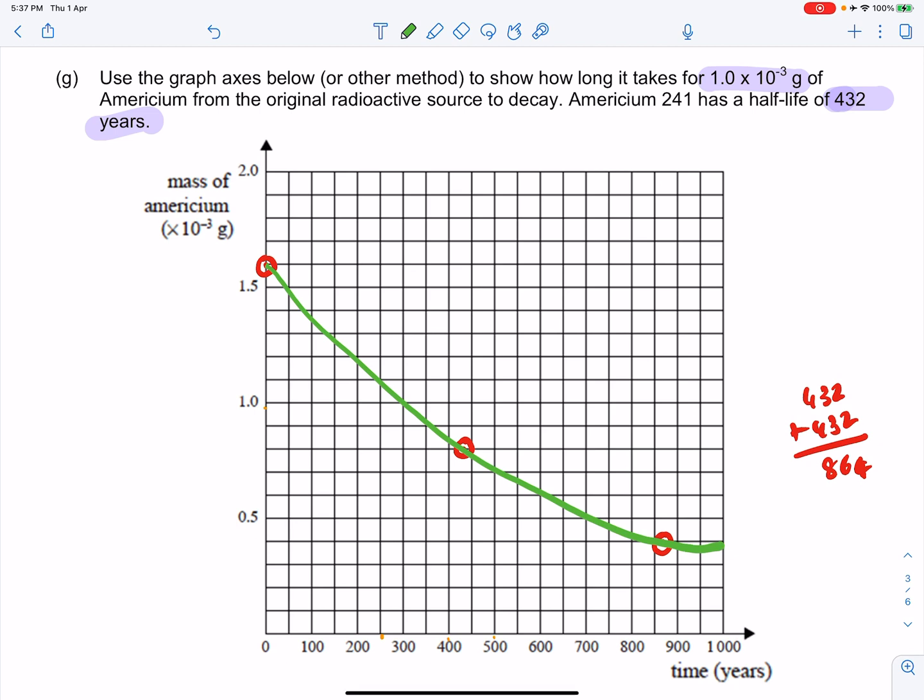You started with 1.6 × 10^-3 and you want to lose 1.0 × 10^-3 grams. So you've got 0.6 × 10^-3 grams remaining.